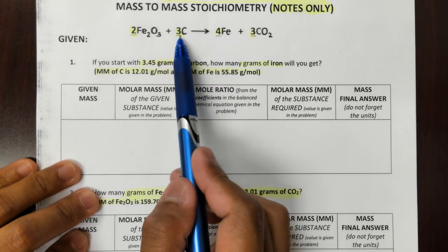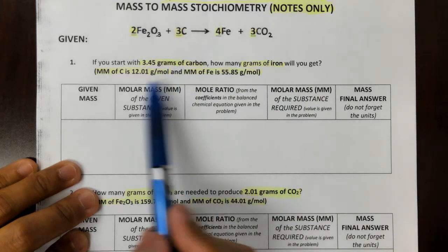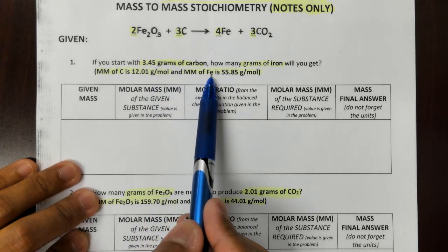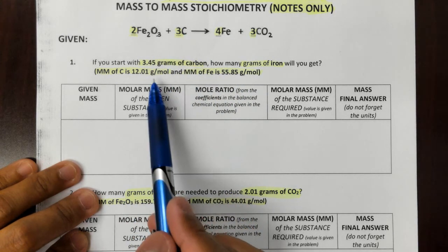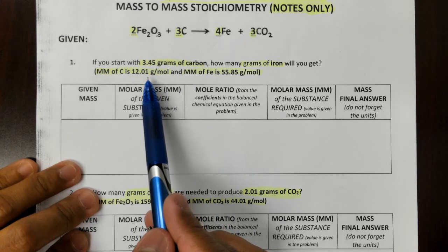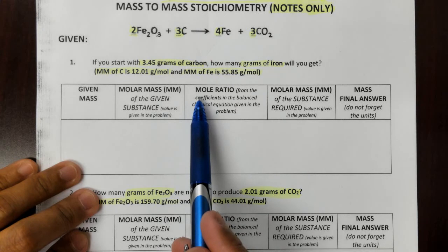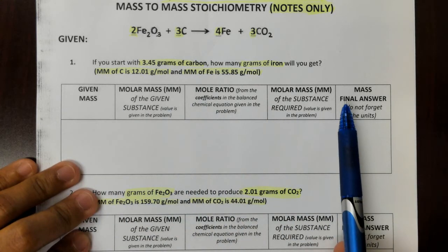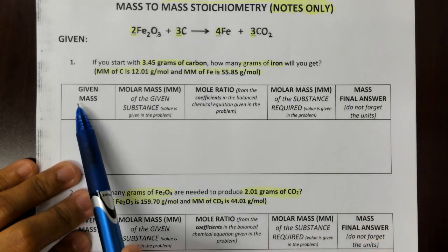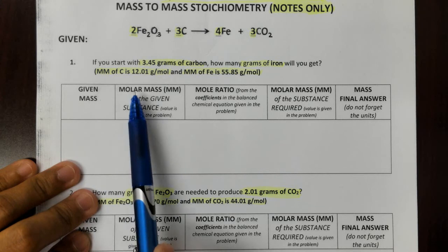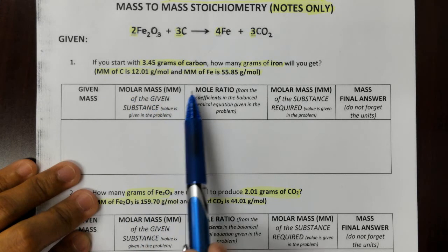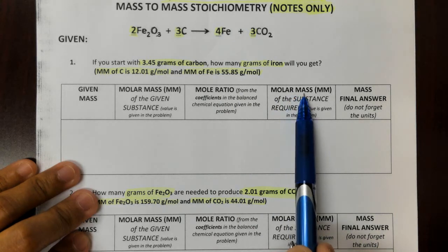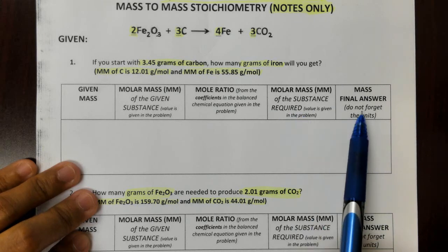These two substances — carbon and Fe — are the ones we're going to focus on. After the problem, you're given the molar mass of C and the molar mass of iron. For mass-to-mass stoichiometry, we're going to use molar masses twice — for both substances. In the solution, the outline goes: given mass, then molar mass of the given, then mole ratio, then molar mass of the substance we're solving for.